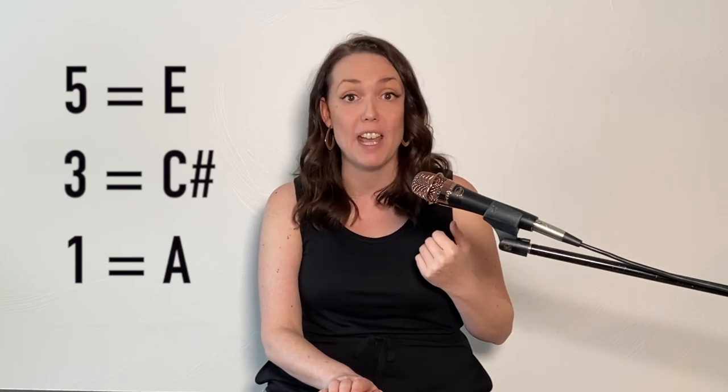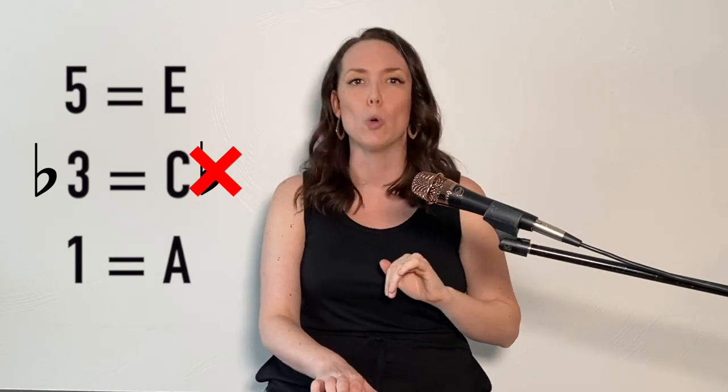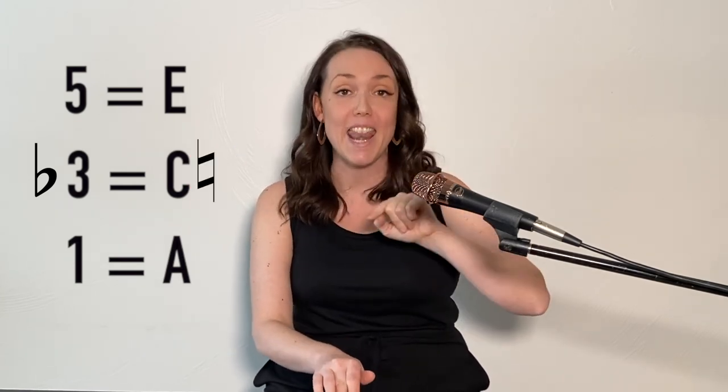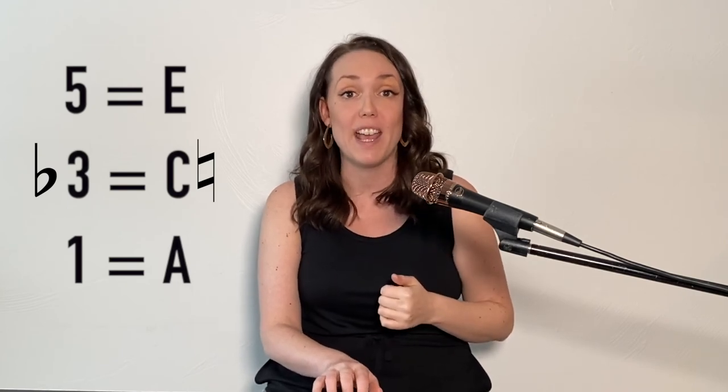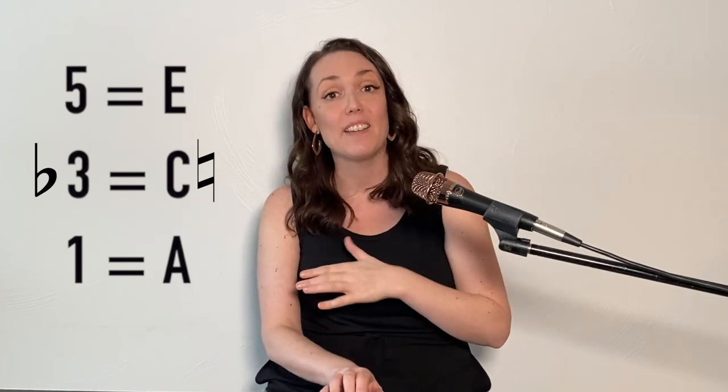Let's go back to our A major triad. 1 was A, 3 was C sharp, 5 is E. There's our happy major triad. But to do minor, we need to flat the 3. C sharp, which is the 3 — C sharp becomes C natural, because C natural is one half step below C sharp. So here's our A minor triad: A, C, E. 1, flat 3, 5.